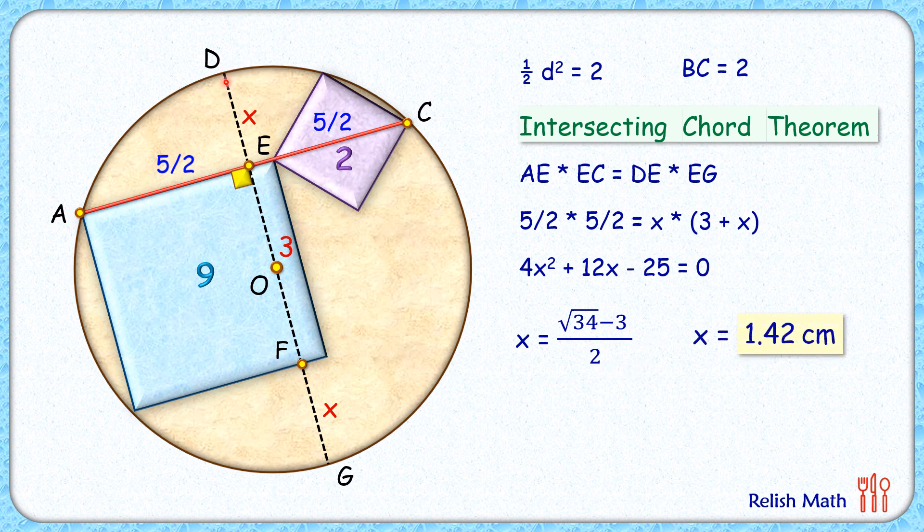Now here DG is passing through the center of the circle, so it's a diameter. So we can get the diameter as 2R is 1.42 plus 3 plus 1.42. Simplifying, we'll get R as 2.92 centimeter, and that's our answer.